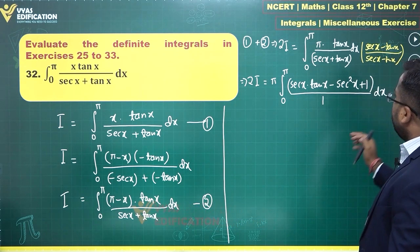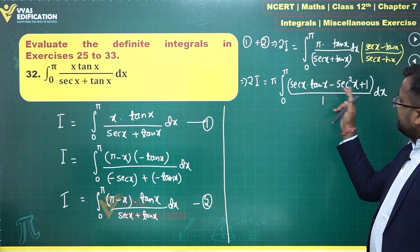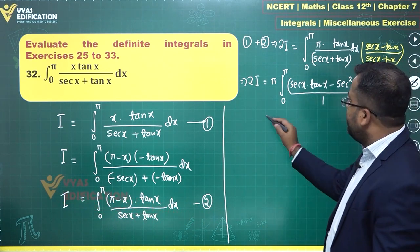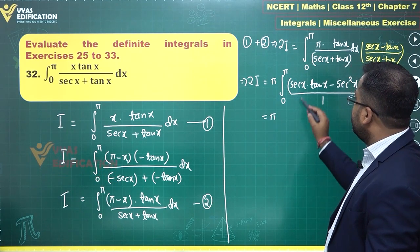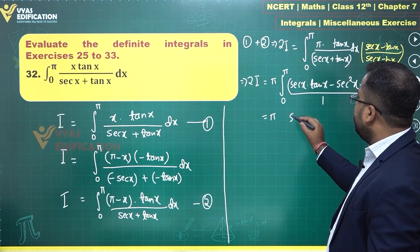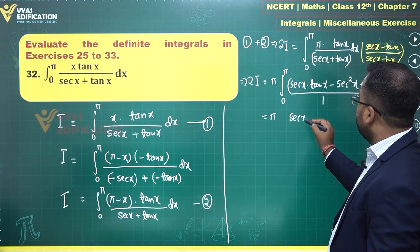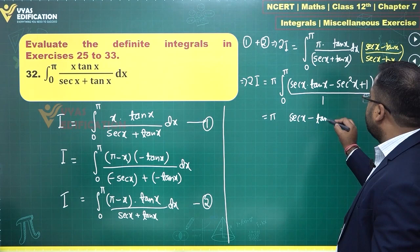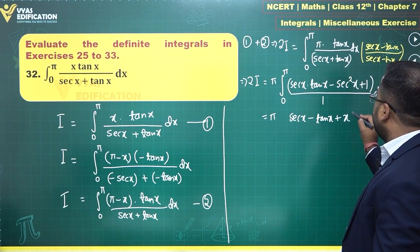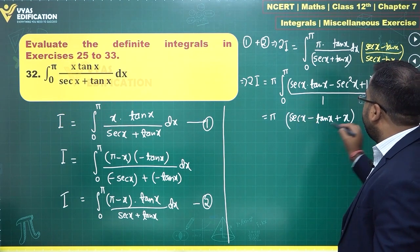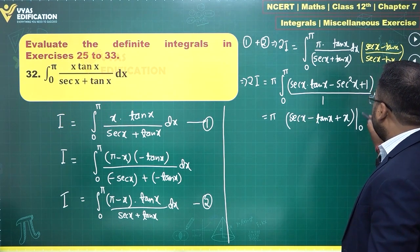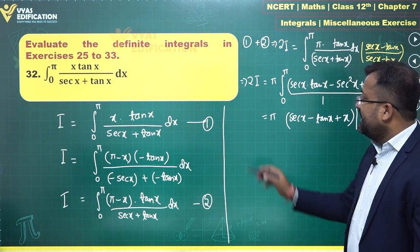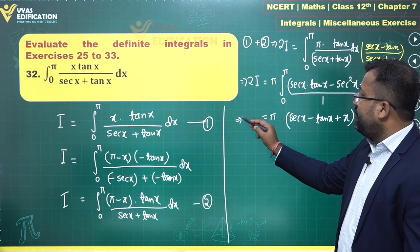Now this is very easy to integrate. The integral of sec x·tan x is sec x, the integral of sec²x is tan x, and the integral of 1 is x. Evaluating from 0 to π gives us the value of 2I.